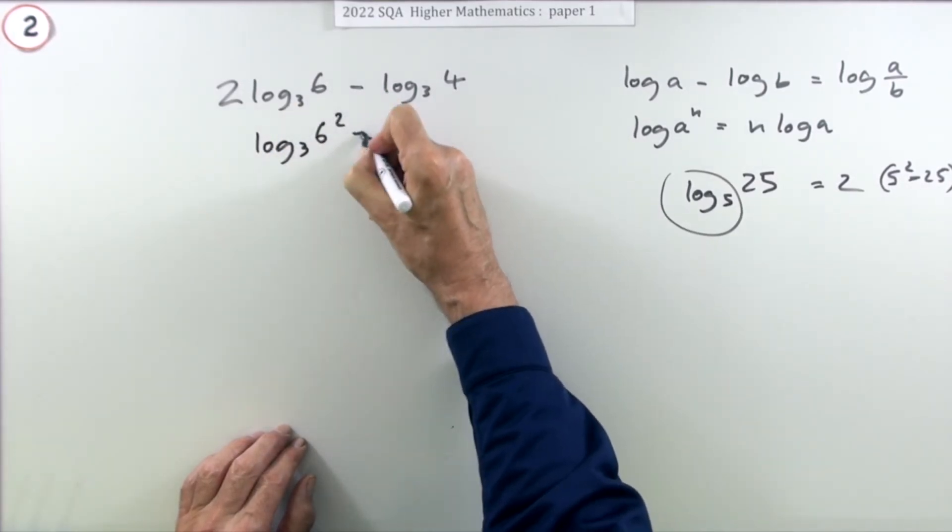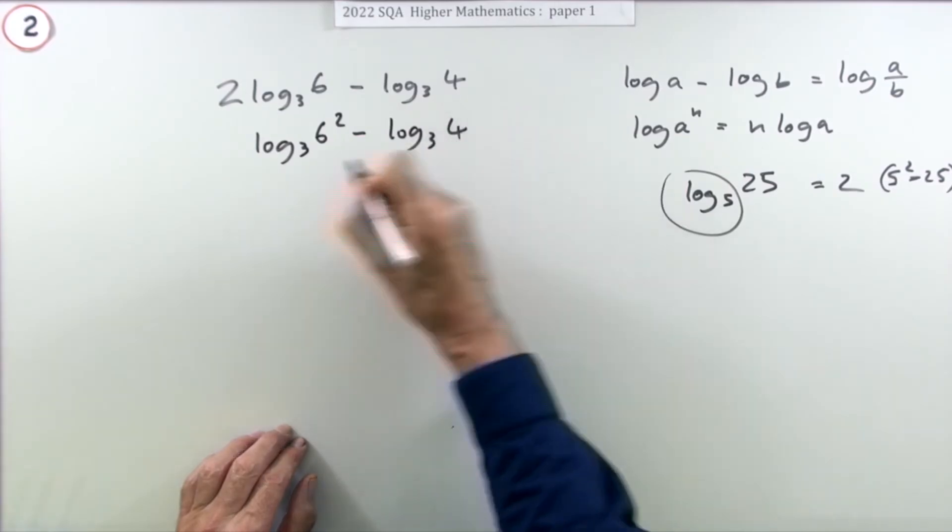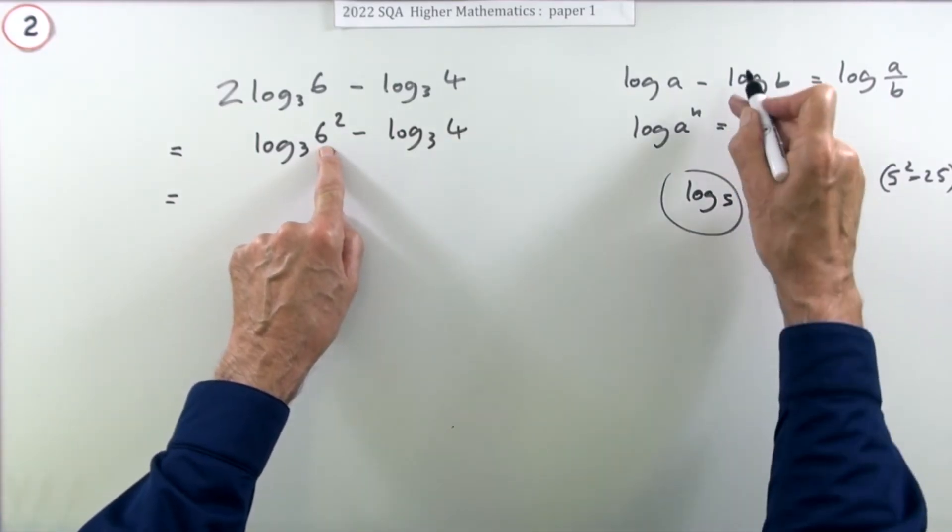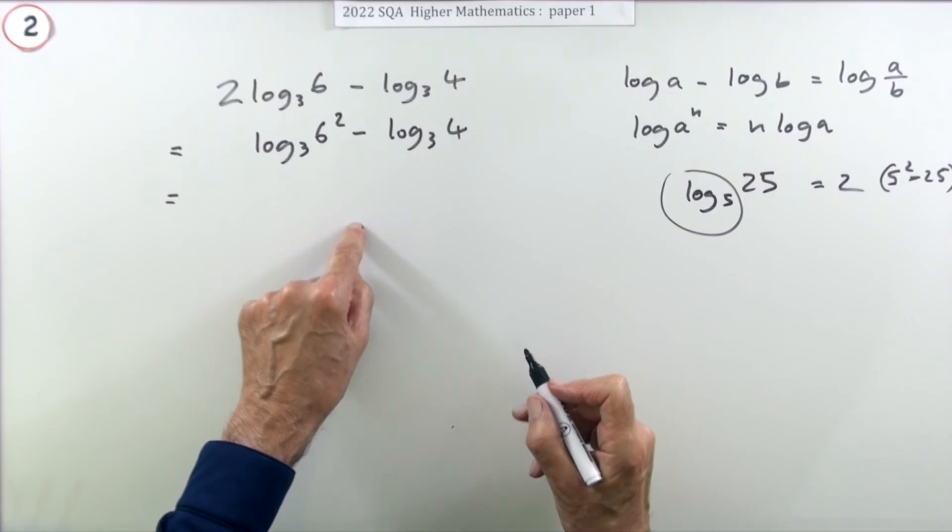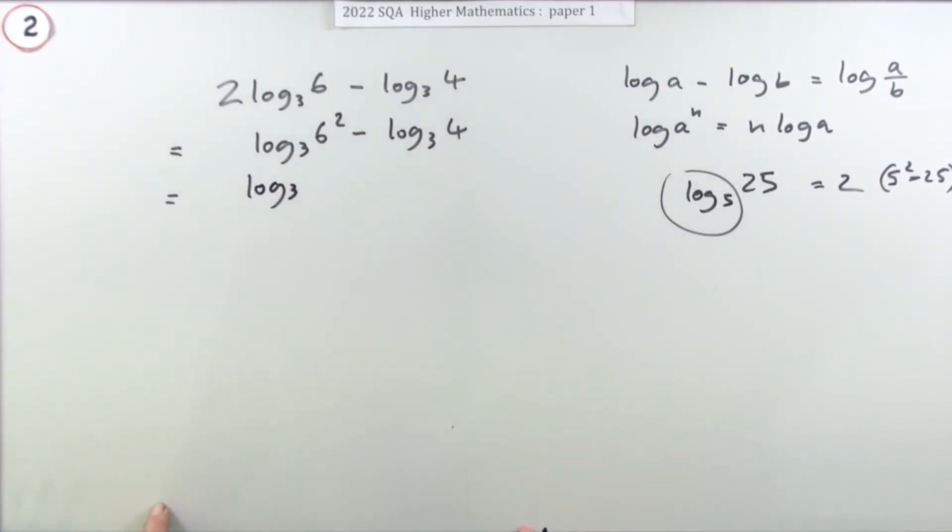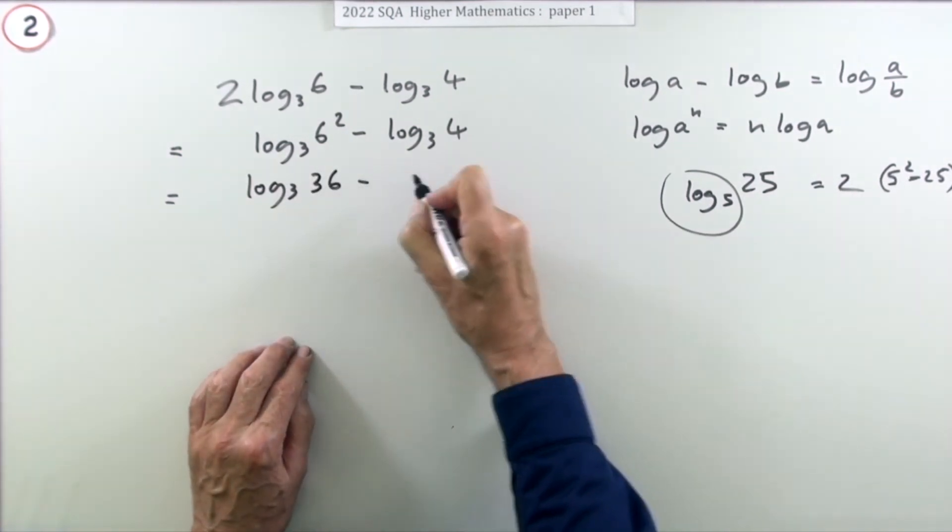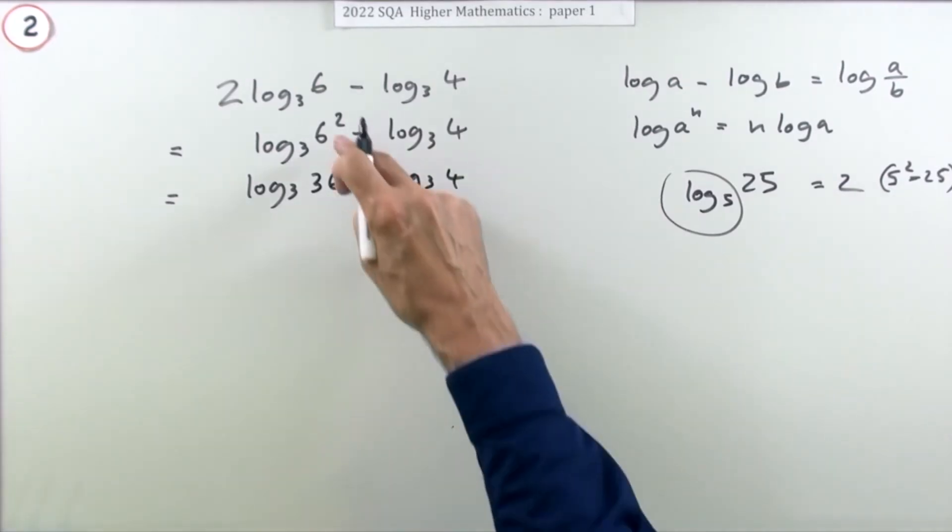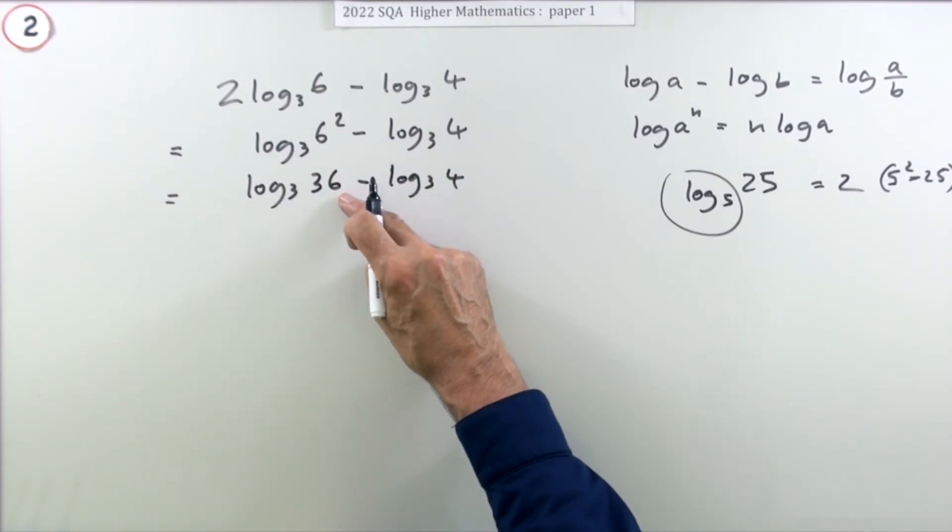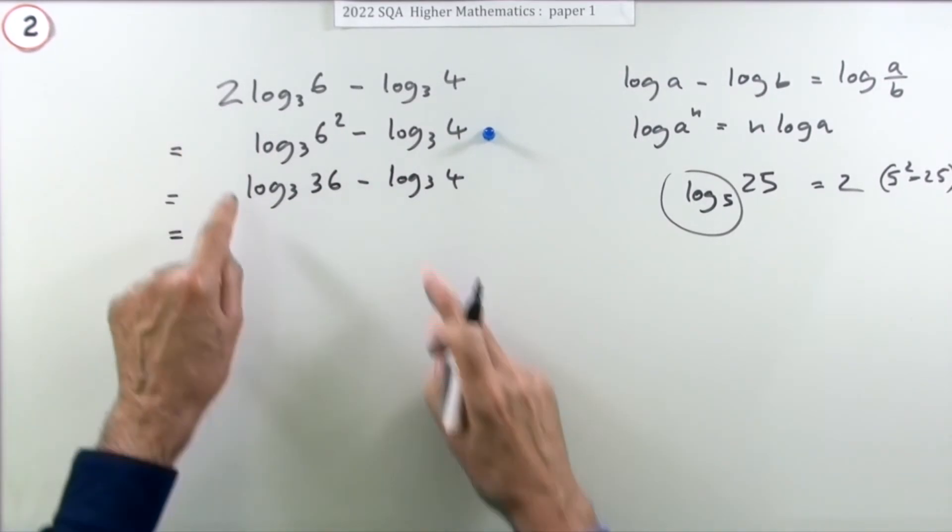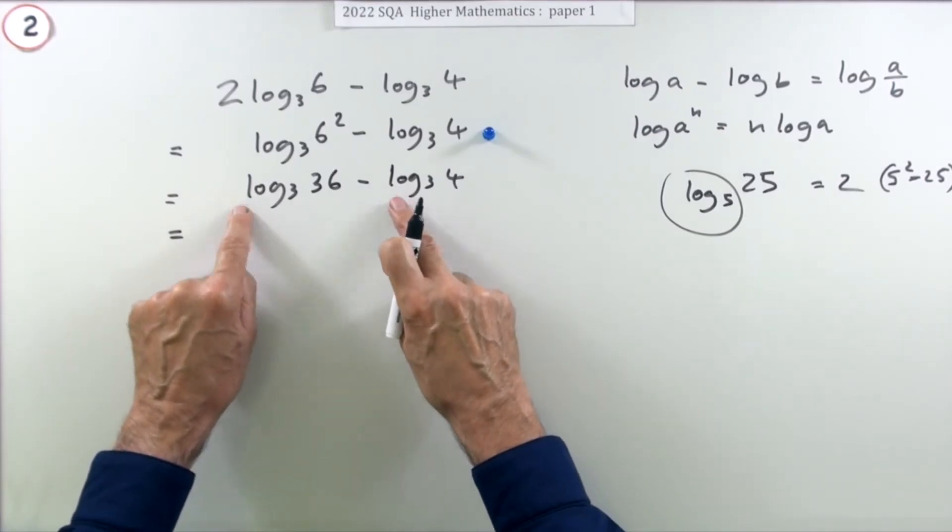It all depends how much work you can put down. You could do that in your head and say 36, now use that to say 36 over 4, or you could spell it out. But if you wanted to spell everything out, you could take up the whole page just about. So that would be log 36 minus log 3 of 4. Now just having that, not necessarily getting the 36, gets you the first mark.